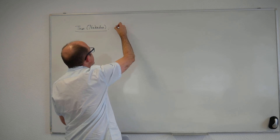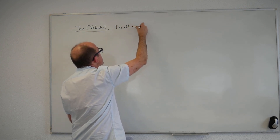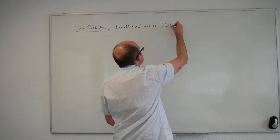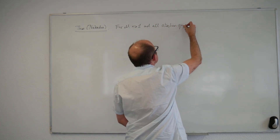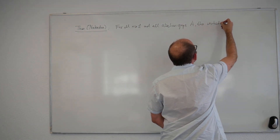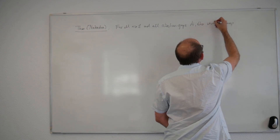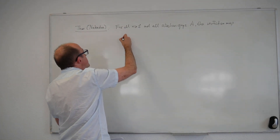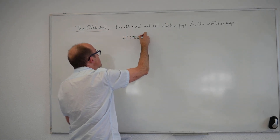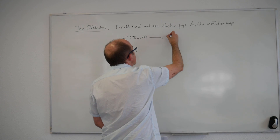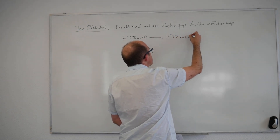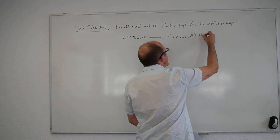The result says that for all N greater or equal to 1 and all abelian groups A, the restriction map in group cohomology from the cohomology of the N-th symmetric group with coefficients in A down to the cohomology of the previous symmetric group Σ_{N−1} with coefficients in A is a split epimorphism.